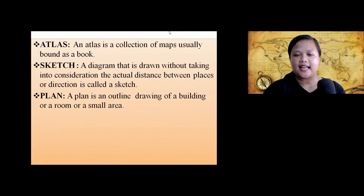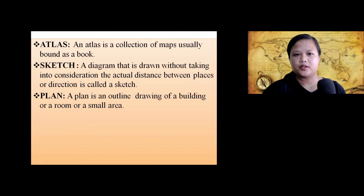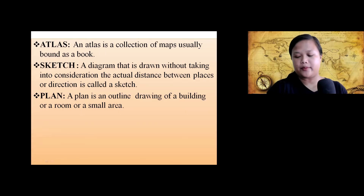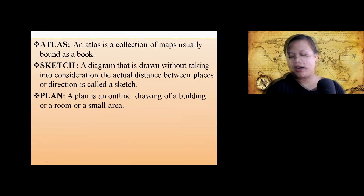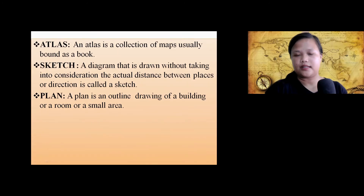Next is an atlas. An atlas is a collection of maps, usually bound as a book. They include information and diagrams related to geographical features and population data.